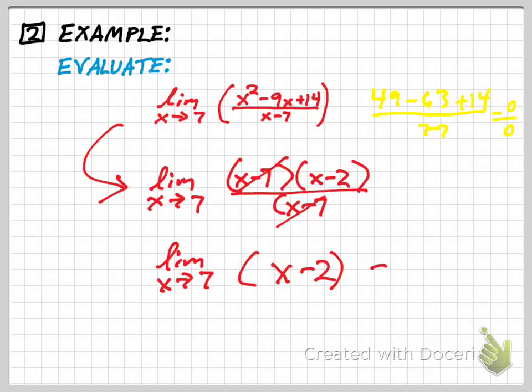Now I've got something that is easy to evaluate. As x gets closer and closer to the number 7, this expression is going to get closer and closer to the number 5.